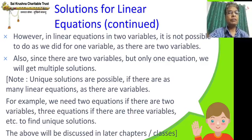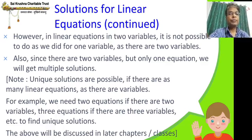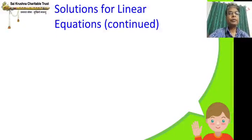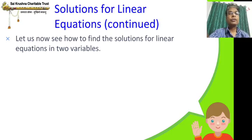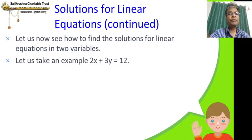In this chapter, we are going to discuss only a single equation, single degree, and two variables. Let us now see how to find the solutions of a linear equation in two variables. Let us take an example: 2x plus 3y equal to 12. This is a typical linear equation.